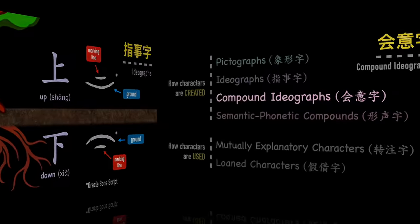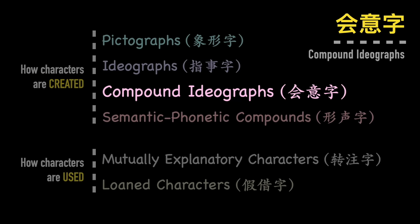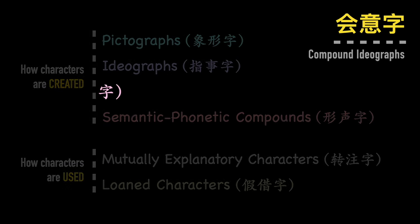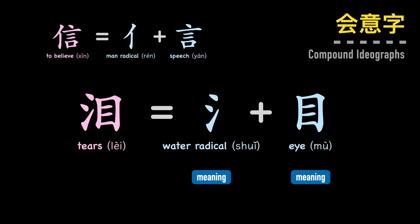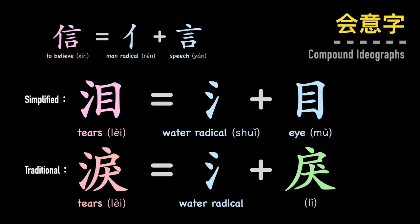The third category is compound ideographs — hui yi zi. These characters are the combination of two or more meaning components. For example, the character xin, meaning to believe, is composed of a man radical and speech, indicating that a person and their words ought to be trustworthy. Or the character for tears, which is a combination of your eyes and three drops of water. Interestingly, the traditional form of this character uses a different type of construction — the semantic phonetic compound — which is our next category.